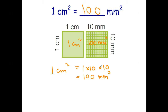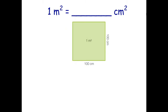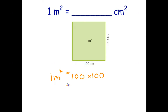Let's try a similar question. I want to convert square meters into square centimeters. Once again I've got this diagram, and I can say: one meter squared — let's convert the length first. One meter on that side is 100 centimeters. Now I convert the width: one meter is also 100 centimeters. Therefore, 100 times 100 gives me four zeros — I get 10,000 centimeters squared. So there's the answer to that question.